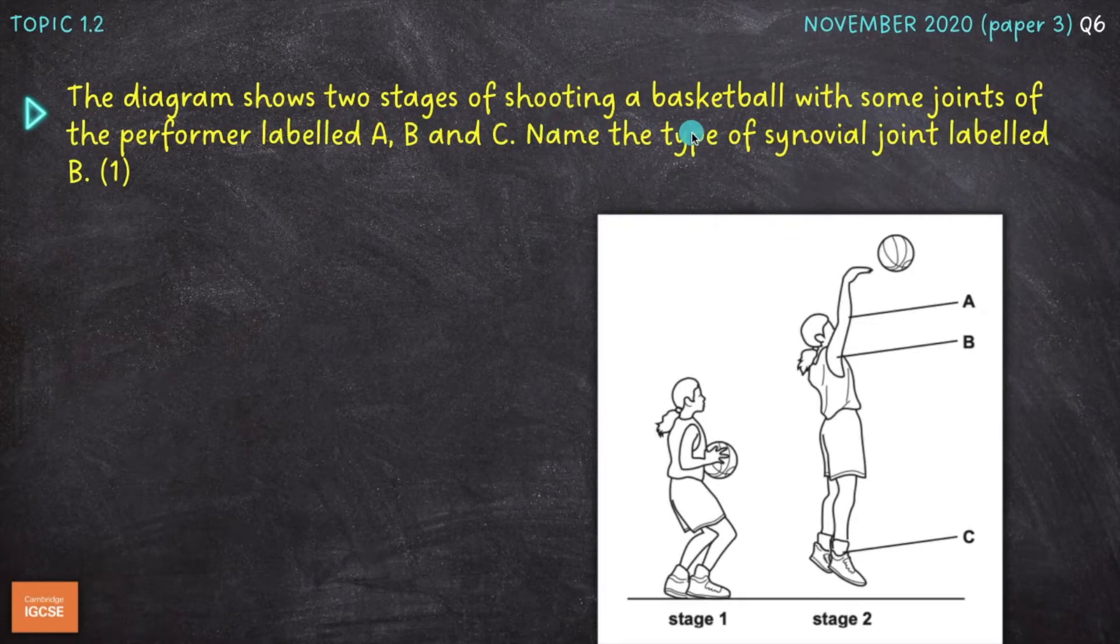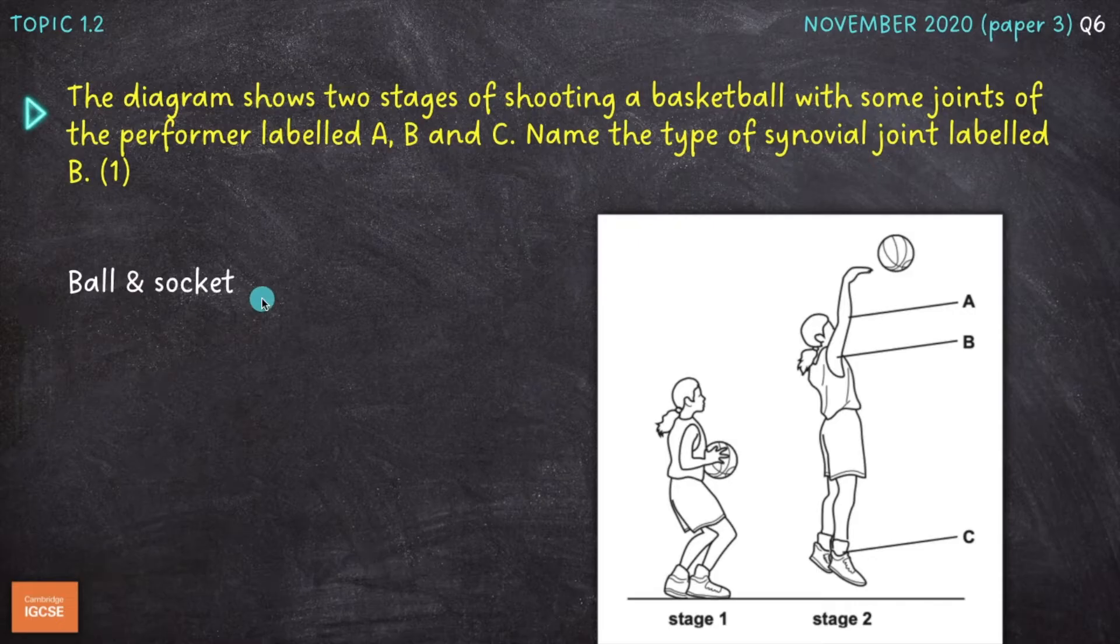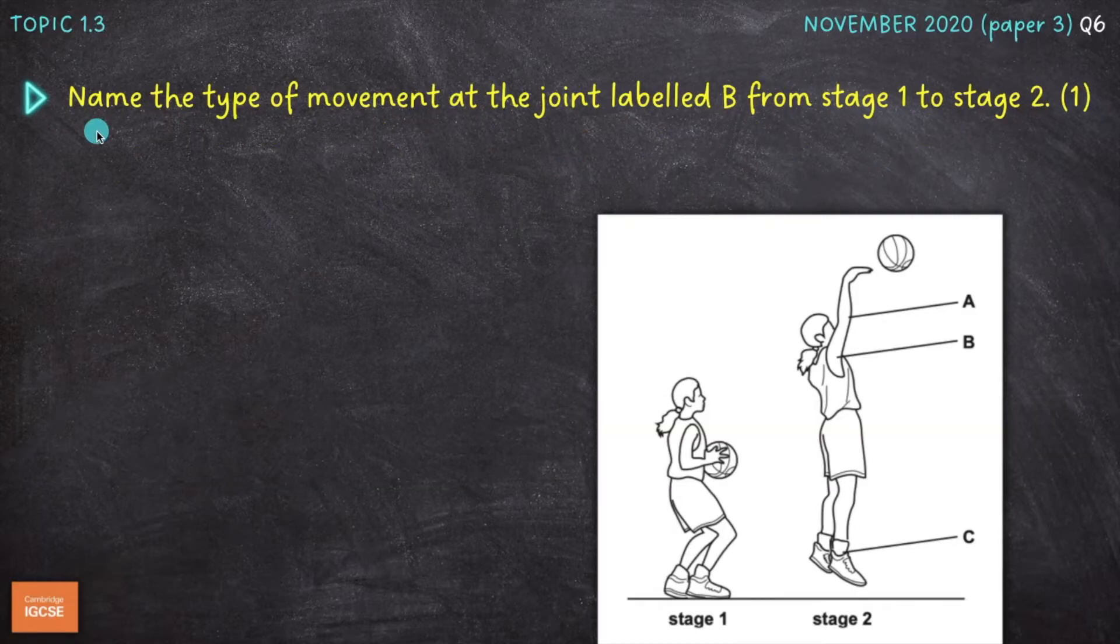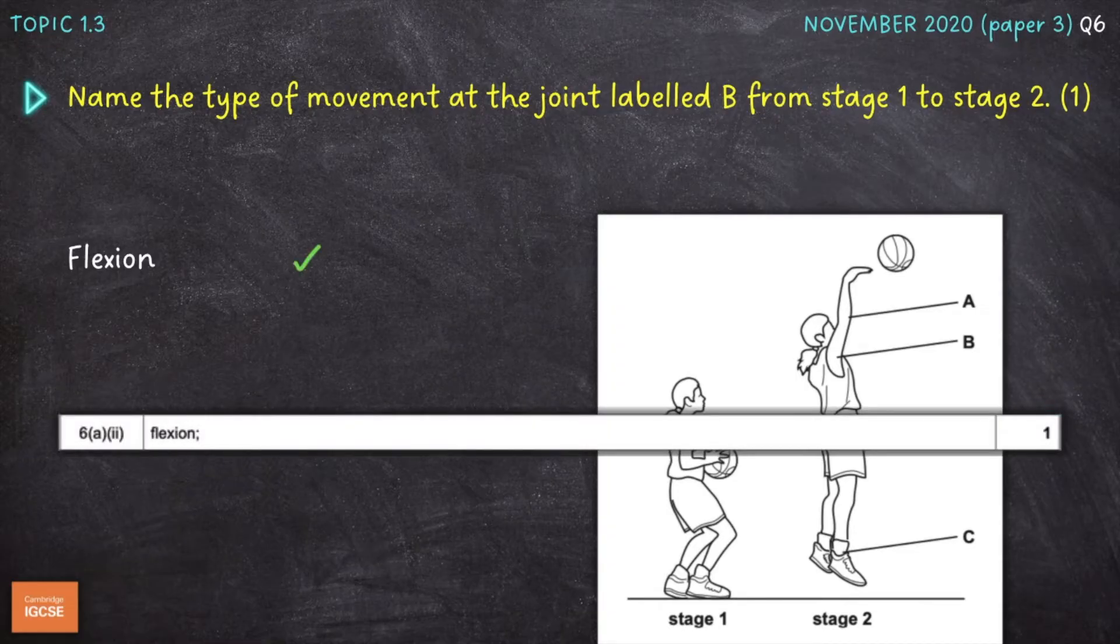Moving on, the diagram shows two stages of shooting a basketball with some of the joints of the performer labelled A, B and C. Name the type of synovial joint labelled B. So which type of joint can we find at the shoulder? That type is a ball and socket. You can see that these kind of questions are repeating themselves a lot here, so very easy marks if you put in a little bit of work and get the repetition you need to remember all of these key points. But we'll move on to the next one, which is to name the type of movement at the joint labelled B from stage 1 to stage 2. So what type of movement is happening here at the shoulder, from this position to this position? Well, moving the arm upwards at the shoulder is flexion, whereas moving it downwards and backwards would be extension.